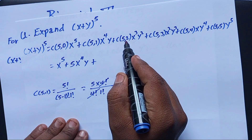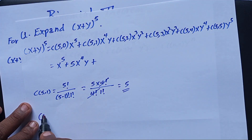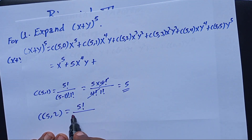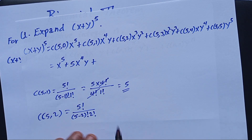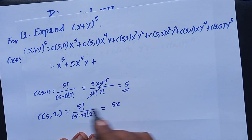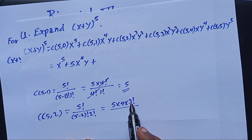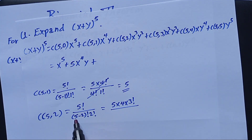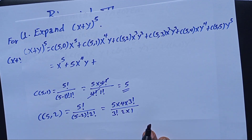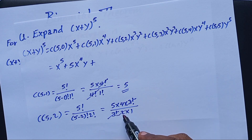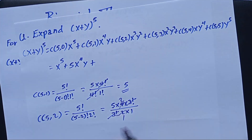Next, let us find C(5,2). C(5,2) equals 5! over (5-2)! times 2!, which is 5 times 4 times 3! over 3! times 2 times 1. The 3! cancels, and 5 times 4 over 2 gives us 10.